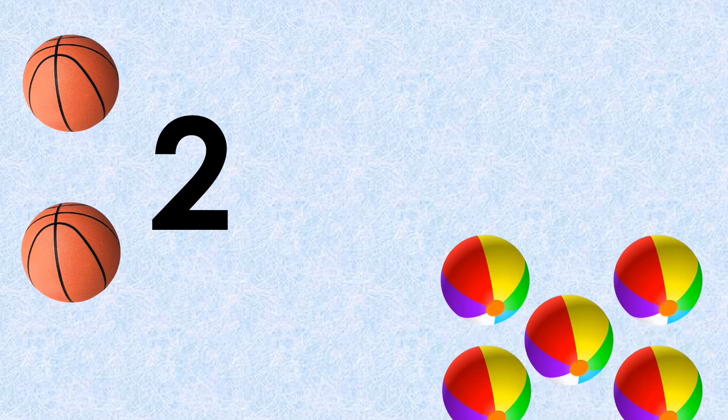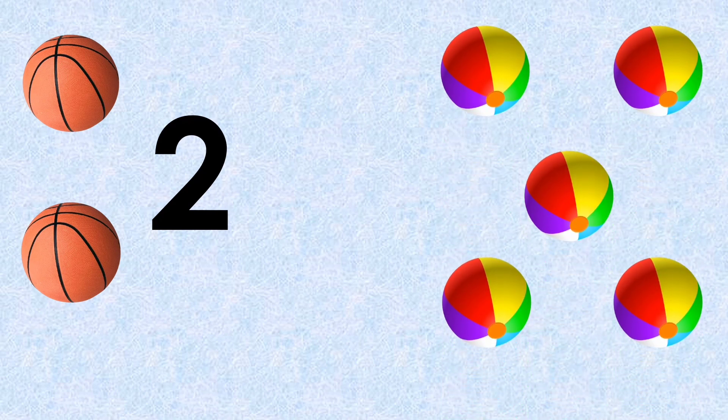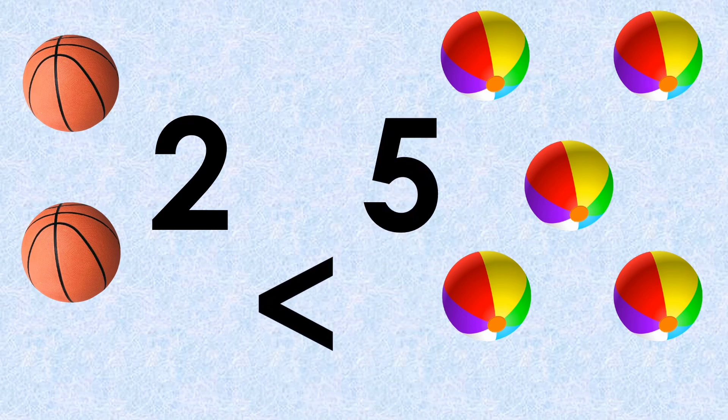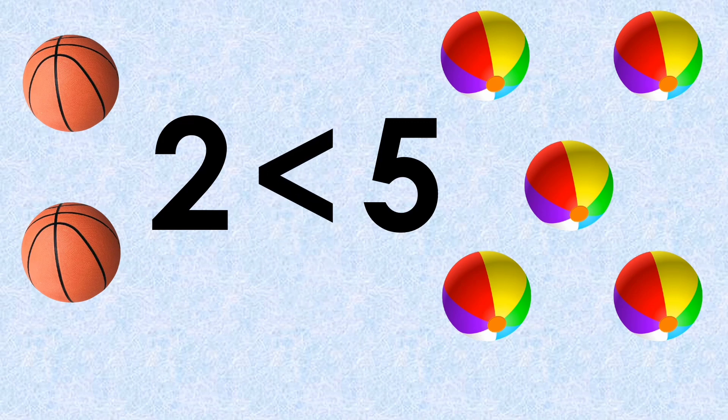Number of basketballs on one side: two. Number of balls on the other side: five. Which number is bigger? Yes, five. Here we will put the less than sign. How we will read this? Two is less than five.